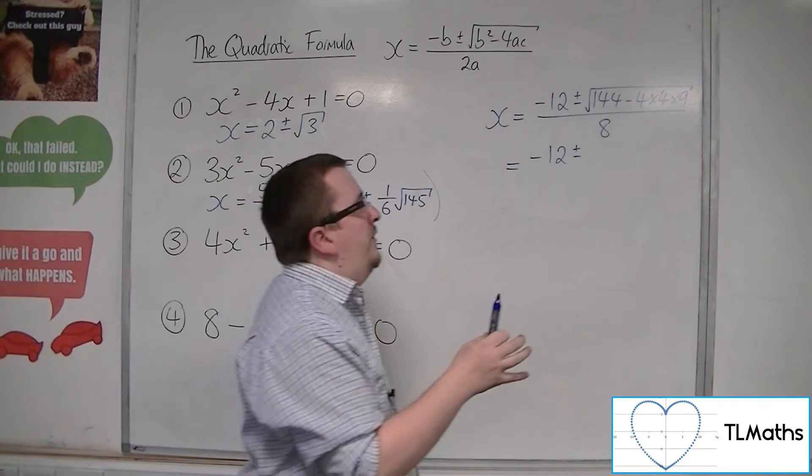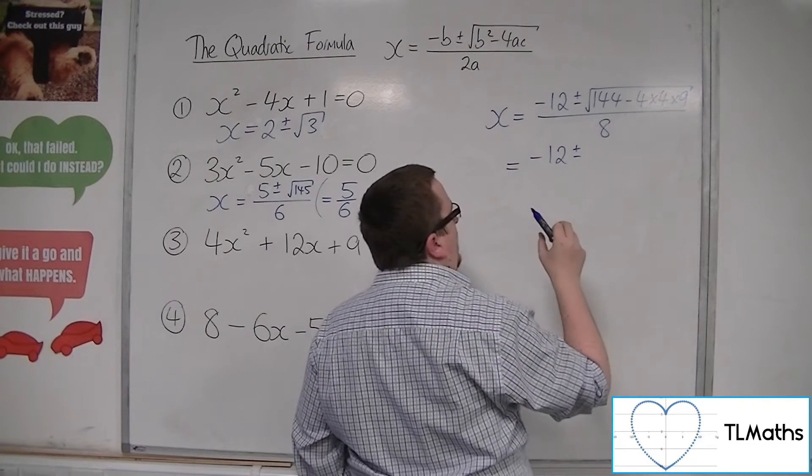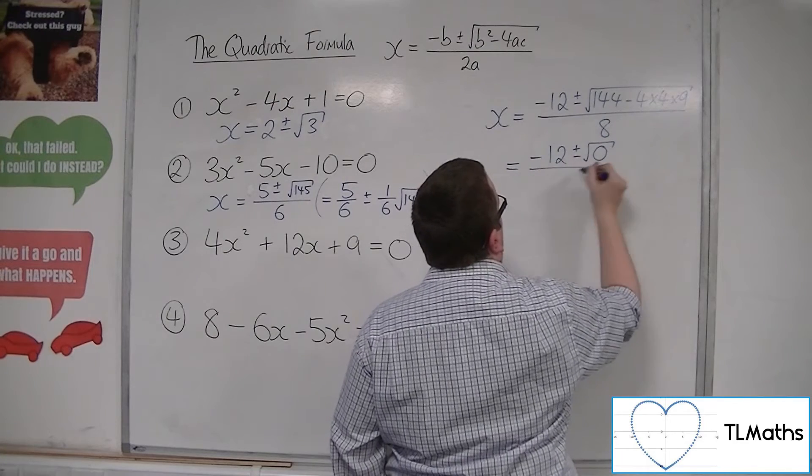So 4 times 36 is double of 72, 4 lots is 144, so that's just 0. So we have the square root of 0 all over 8.